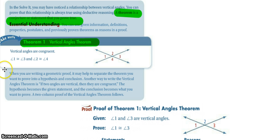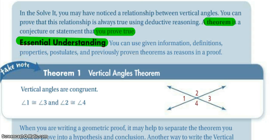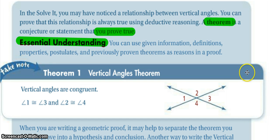So here we go. The first thing we want to talk about is what a theorem is. A theorem is anything that we can prove true. It's a conjecture or statement that when we start, we may not know that it's true, but then we will prove it to be true.